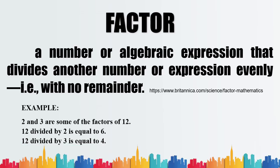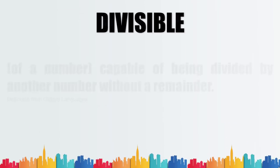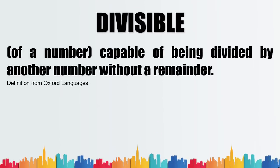When we say divisible, the number is capable of being divided by another number without a remainder. Example: 30 is divisible by 3, for if we divide 30 by 3, the answer is a whole number which is 10.